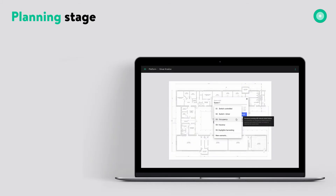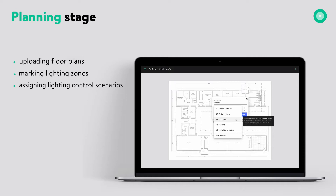The process begins with the planning stage in our web app. Here you create and manage your wireless lighting infrastructures by uploading floor plans, marking lighting zones, assigning lighting control scenarios and more. Everything at this stage can be done remotely. In fact, the building doesn't have to exist yet to prepare it for the Bluetooth mesh network. All you need is a floor plan.